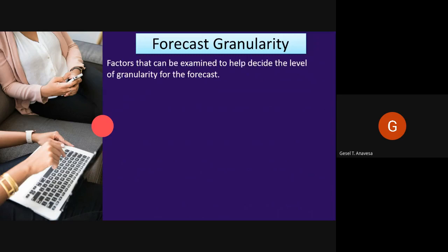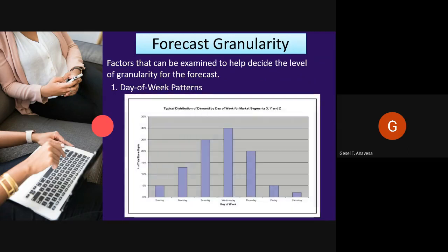The first factor that can be examined to help decide the level of granularity for the forecast is the day-of-week pattern. You can examine the way that each of the segments or groups of segments perform through the week. The typical percentage of overall business that the selected segments stay on each night of the week can be calculated and then used to distribute future anticipated volume of business by day of week.